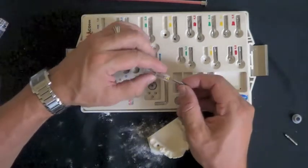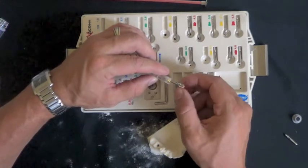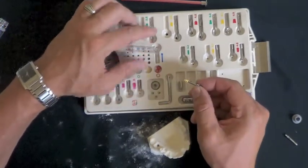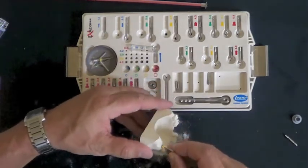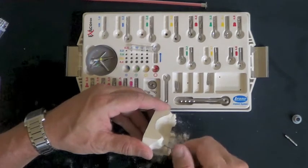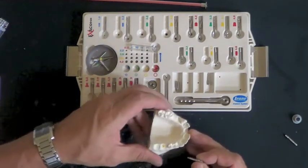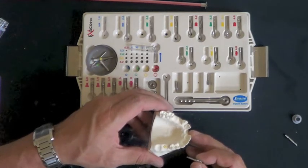It's threaded on the end. Simply rotate this in a couple turns. Pull the cover cap off of the carrier. Insert it into the implant site just by pushing it down. Rotate it counterclockwise. And now you have your cover cap placed on the implant.